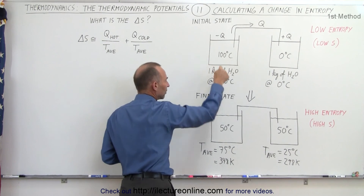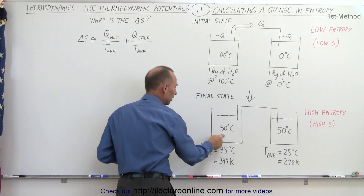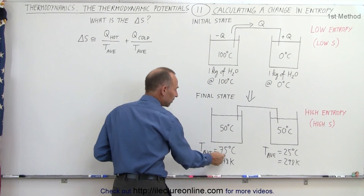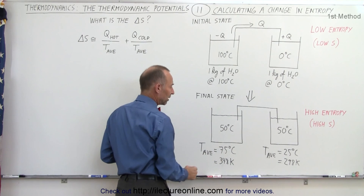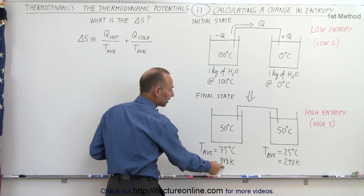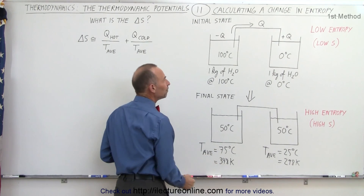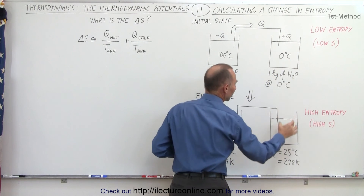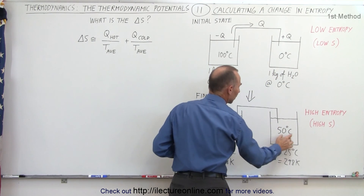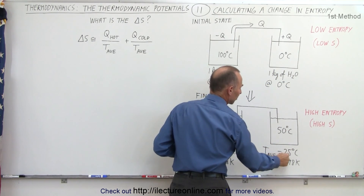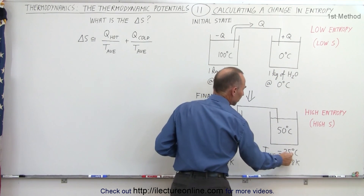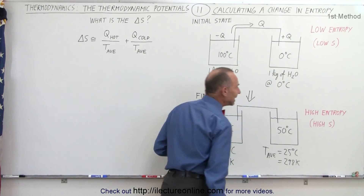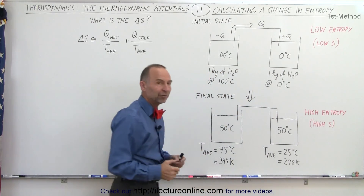This container went from 100 degrees centigrade to 50 degrees centigrade, with an average temperature of 75 degrees centigrade or 348 Kelvin. And this container went from zero degrees centigrade to 50 degrees centigrade, with an average temperature of 25 degrees centigrade or 298 Kelvin.